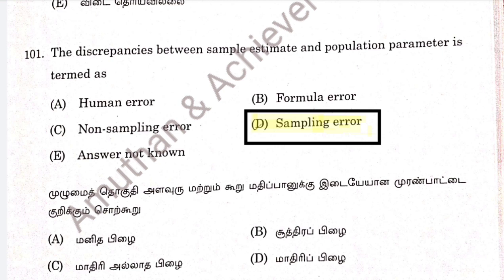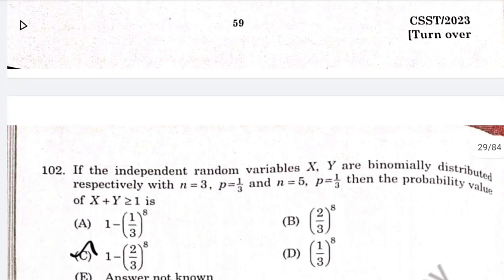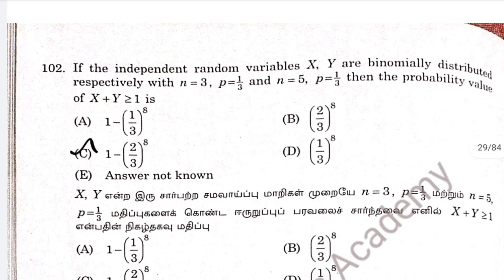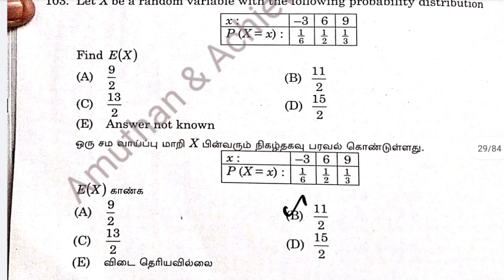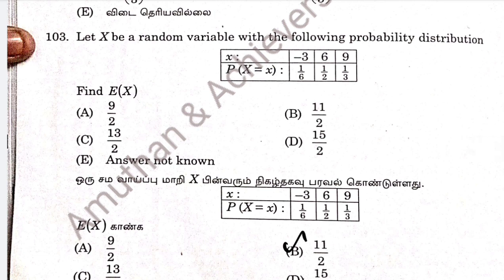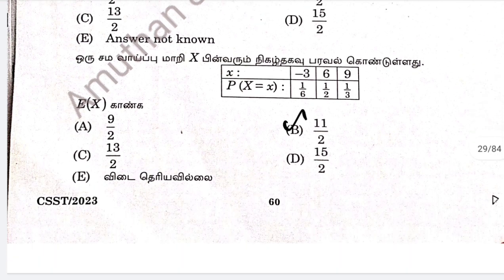Question 102 covers the discrimination between sample estimate and population parameters, and sampling error based on binomial distribution. The answer is option C: 1 minus 2 by 3, 1 minus 8. Question 103 is a very simple expectation problem. Option B: 11 by 2.